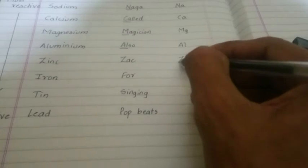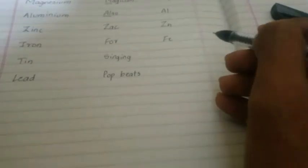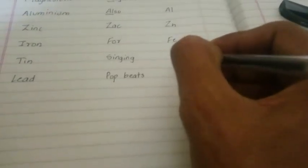For zack you write down Zn for zinc. For for you write down Fe, that's for iron. For singing you write down Sn which makes it tin. And for pop beats you take the initials Pb which is for lead.